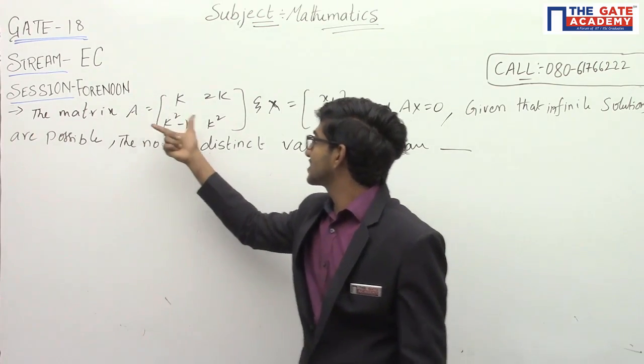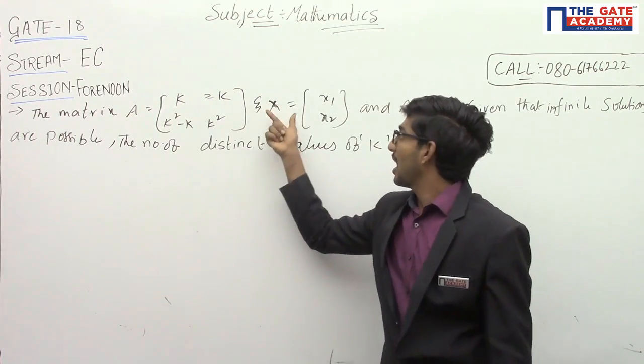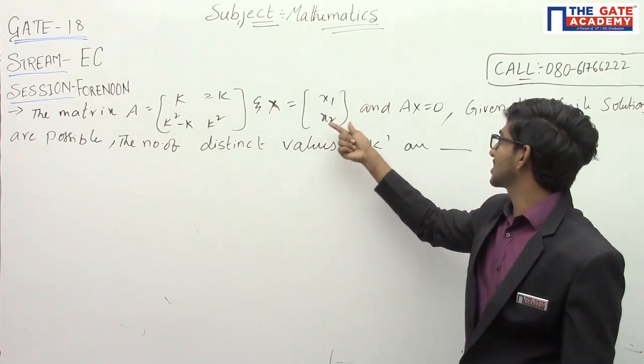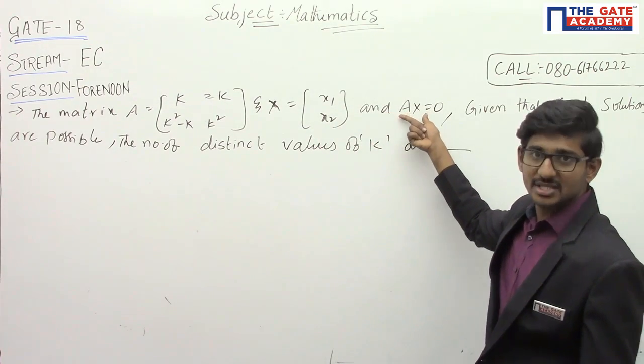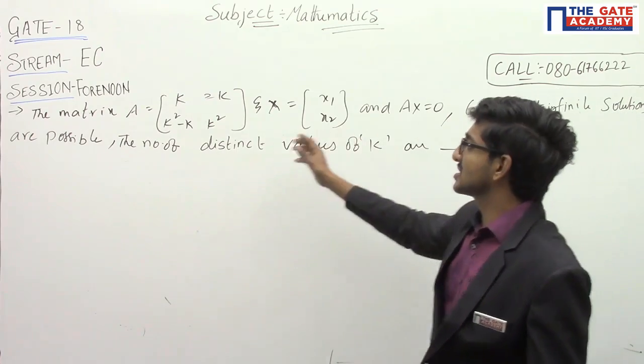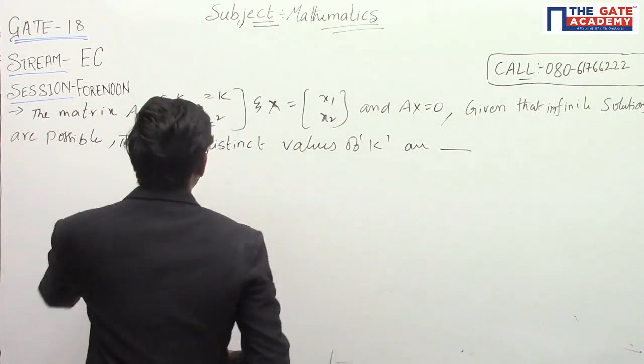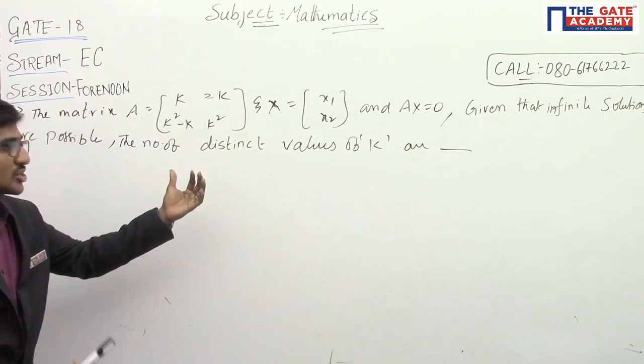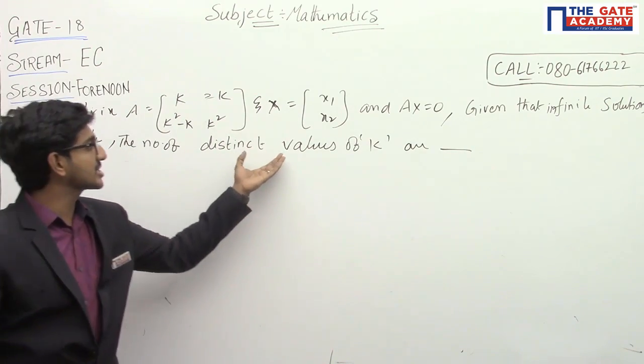Simply they ask that the matrix A is given and variable matrix x1 and x2, and they mention that Ax is equal to 0, given that the infinite solutions are possible. So, for these expressions, if you have infinite solutions, the number of distinct values of k.